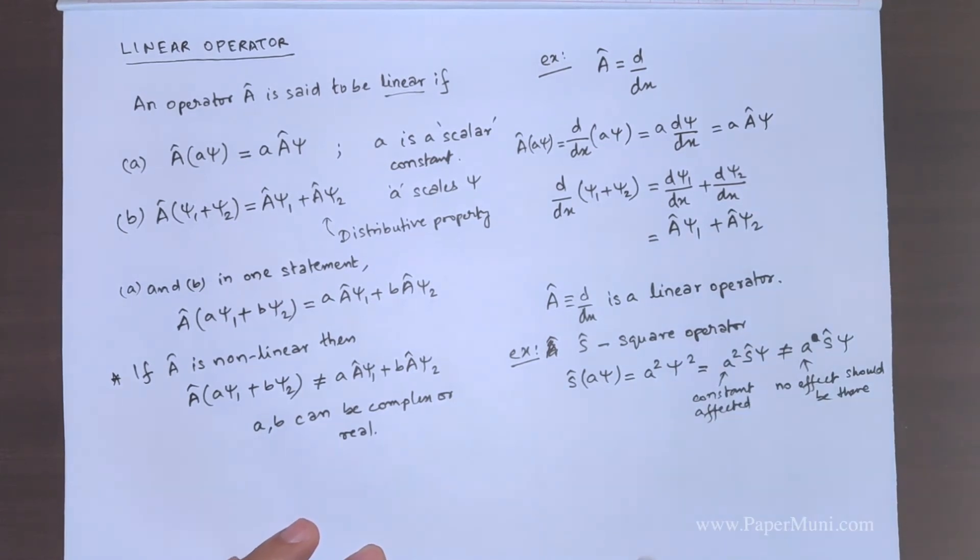This cannot be a linear operator. We need to see this. This does not fall. We can safely say that this square operator is not a linear operator. We should check the other one also for complete conclusion.